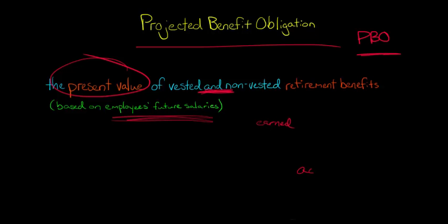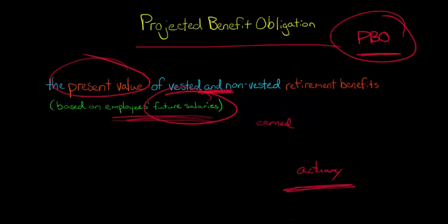But the actuary makes assumptions about employee turnover, all kinds of things. They even make assumptions about future salaries. So they make these assumptions, build it in. That's why we hire actuaries to do this work and ultimately come up with this projected benefit obligation, the present value of the retirement benefits that this firm is ultimately going to have to pay.